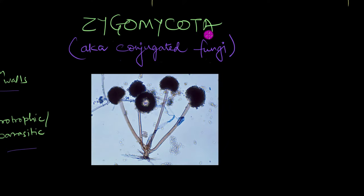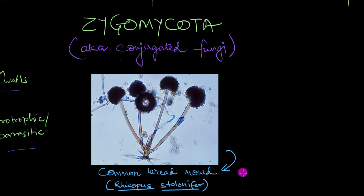Next up, we have the zygomycetes, members of the phylum Zygomycota. And we've already come across a zygomycete before. Remember the stale moldy bread at the beginning of this video? Well, the fungus that grows on stale bread is called the common bread mold, scientifically called Rhizopus stolonifer, which is this fungus right over here. So if you take a piece of that moldy bread and place it under a microscope, this is what you're going to see.